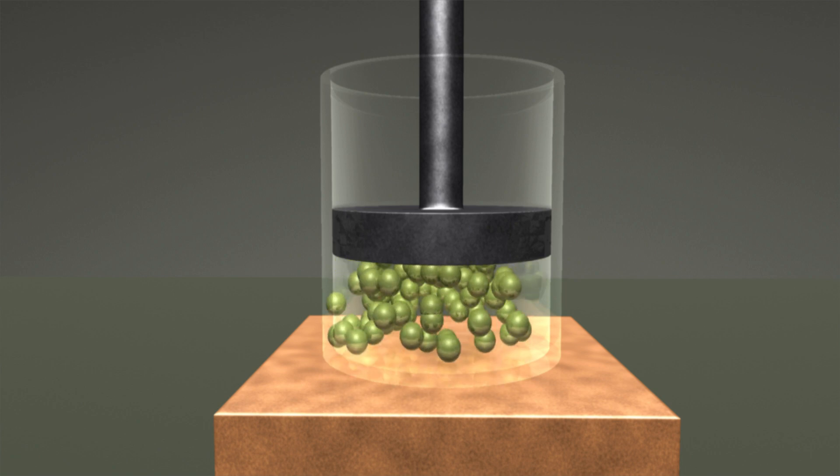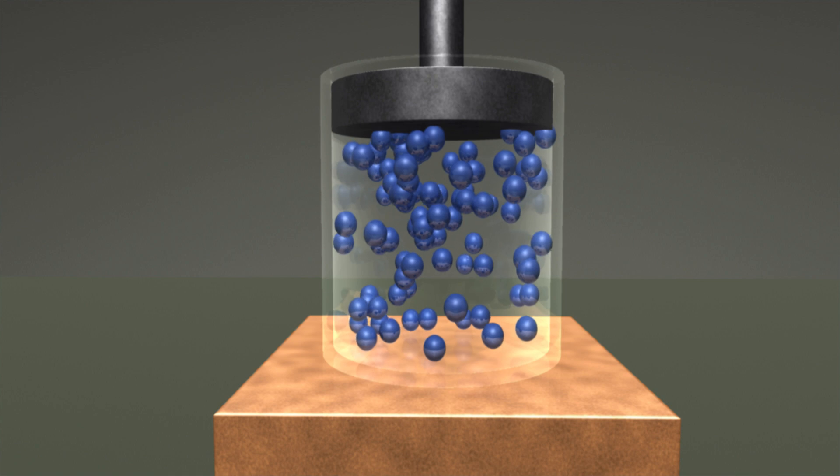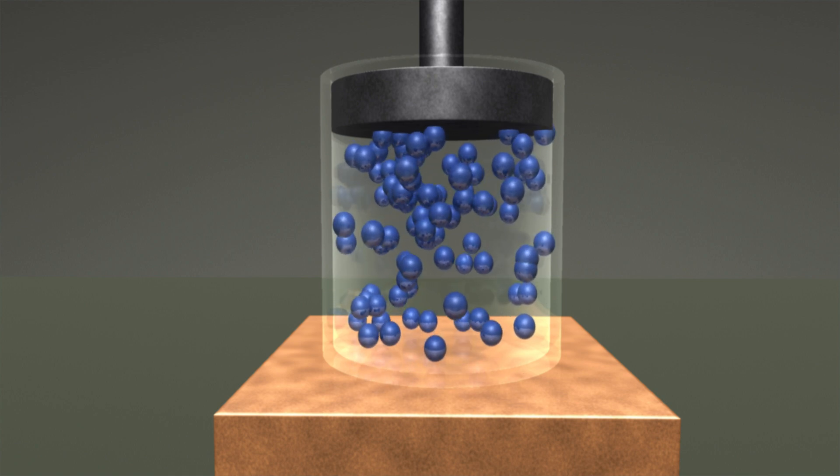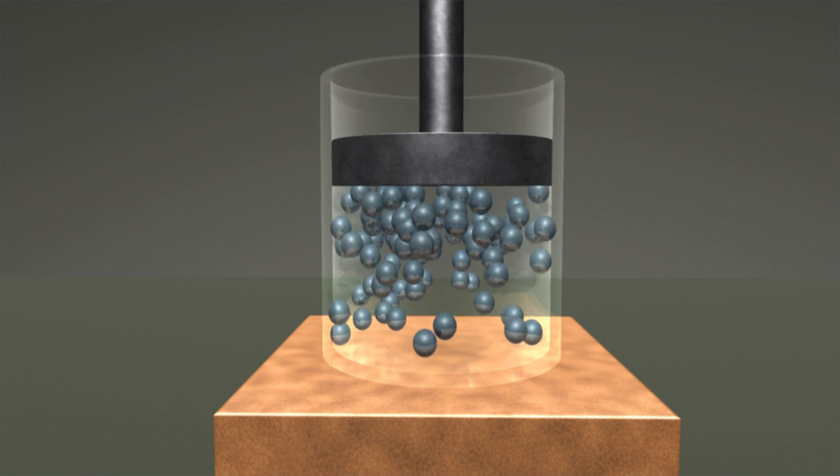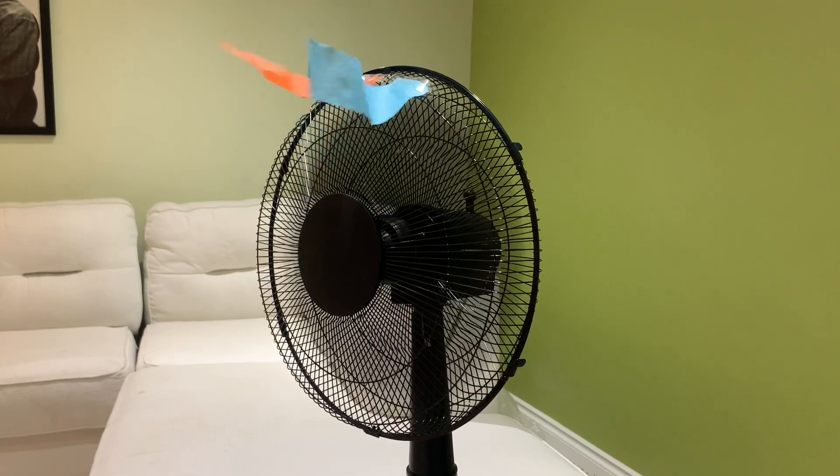In thermodynamics, we talk a lot about pressure volume work. For example, a gas supplies pressure on a piston and moves it, thereby doing work on the piston. The piston can also do work on the gas. Other types of work are like electrical work or maybe shaft work. Here, the fan is doing work on the air via the kinetic energy of its blades.